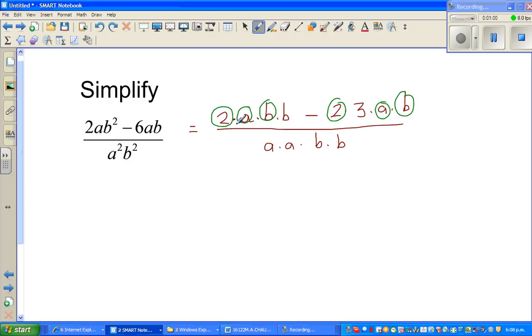What is common? I'm going to write the next step like this: 2ab times b minus 2ab times 3, so 2 times a times b. This is 2ab squared and this is 6ab over ab times ab.